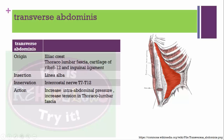Transversus abdominis muscle: originates from the iliac crest, thoracolumbar fascia, cartilage of ribs 6 to 12, and the inguinal ligament, and inserts into the linea alba. Innervation from intercostal nerve T7 to T12. Action: increases intra-abdominal pressure and increases tension in the thoracolumbar fascia.